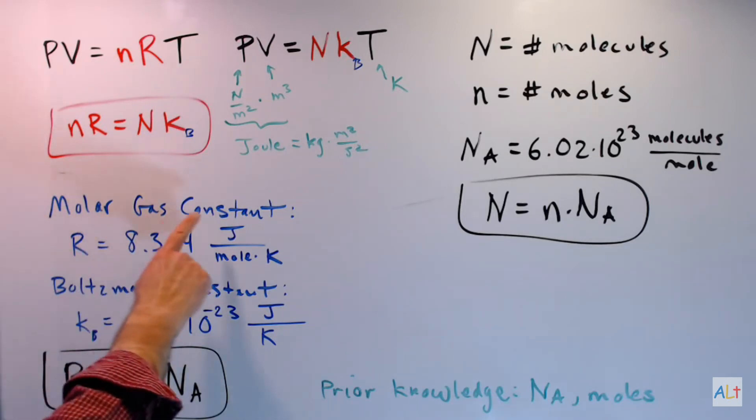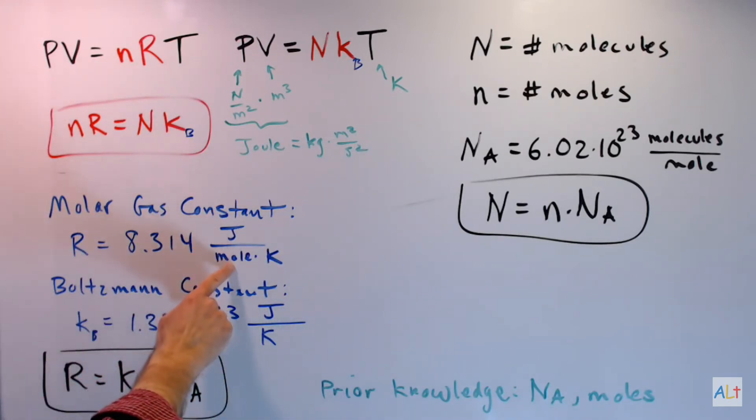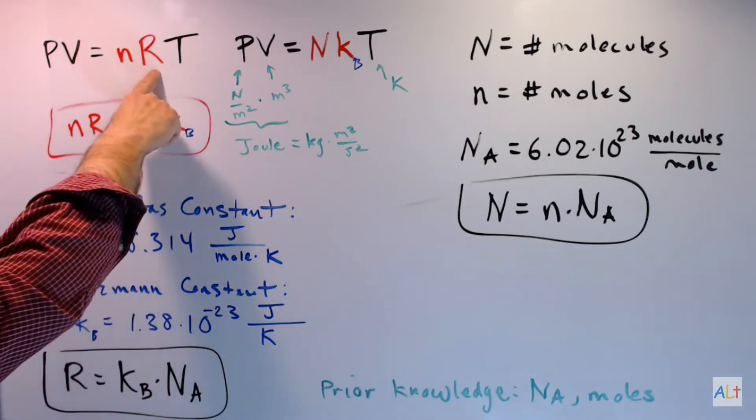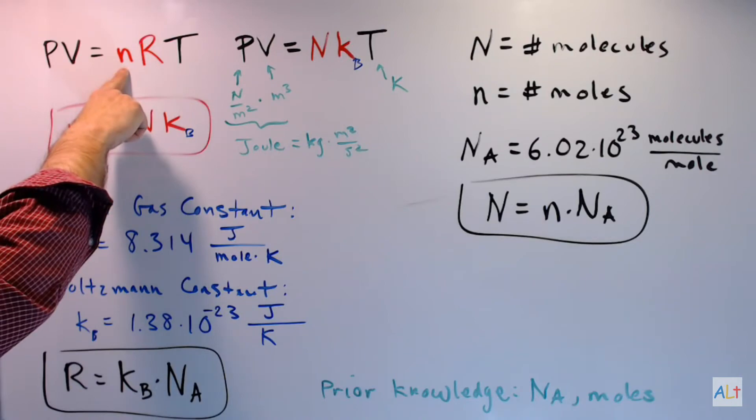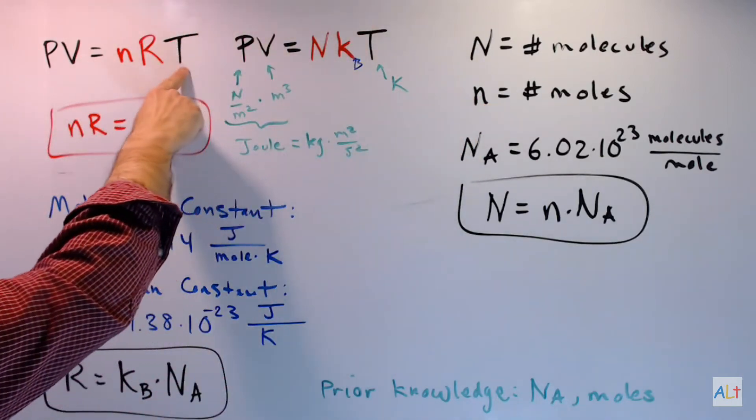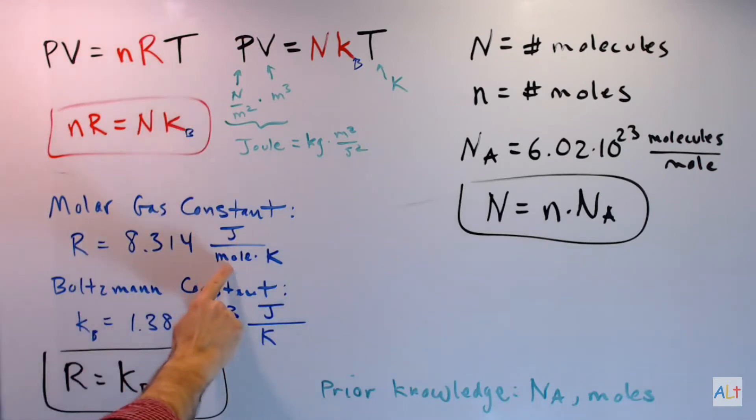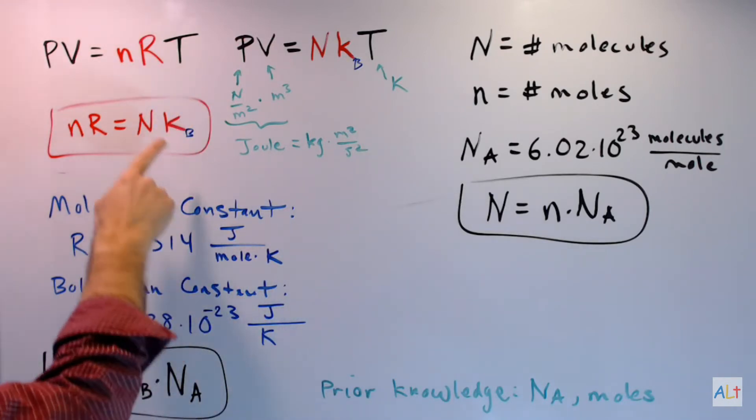And the units for PV and T are the same here as they are here. Take a look at this molar gas constant. It has units of joules over moles times kelvins. You can see when you multiply the gas constant times n, which is measured in moles, and T, which is measured in kelvins, the moles and the kelvins will cancel with the moles and the kelvins in the denominator. You'll be left with joules, which is what you expect on the left side.